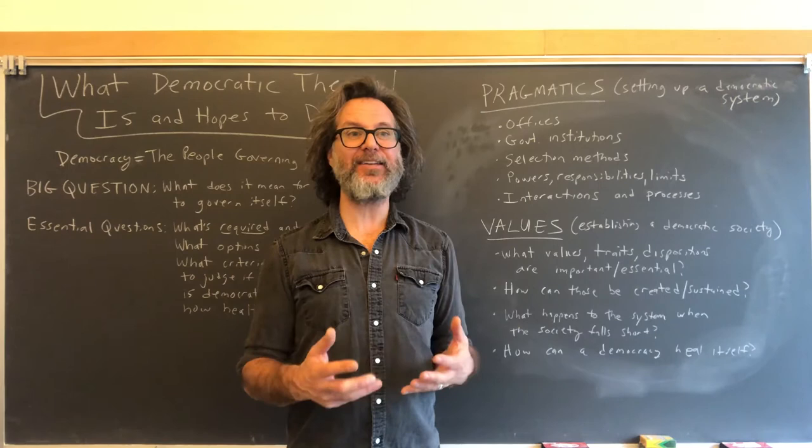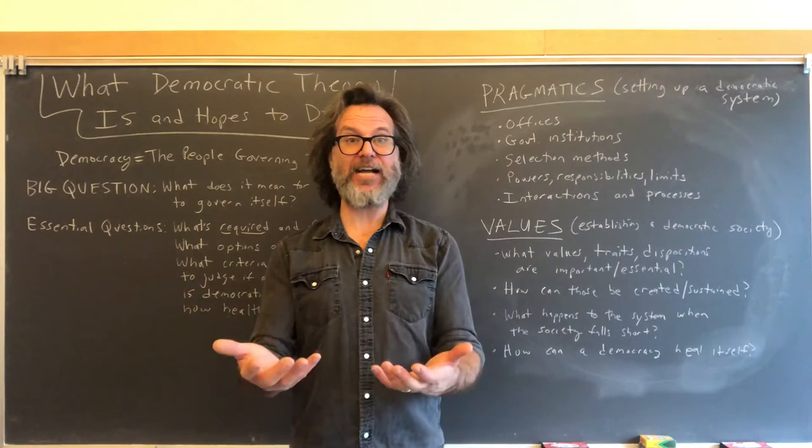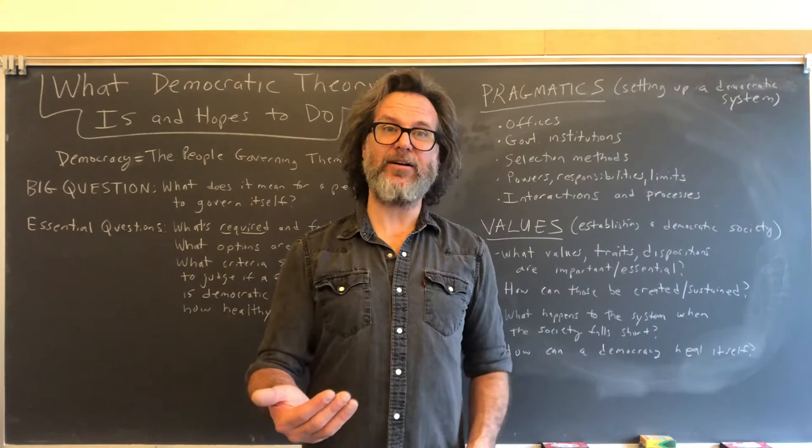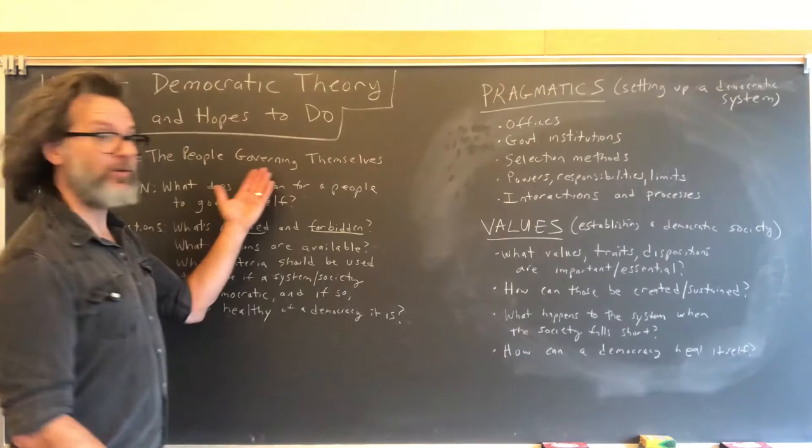A democratic system is like a machine built to produce outcomes — decisions and actions by the government, what generally falls under the term 'policy.' Policy outcomes are what any system of government gives us, democratic or not. We want to make sure in a democratic system that those policy outcomes represent the people governing themselves.